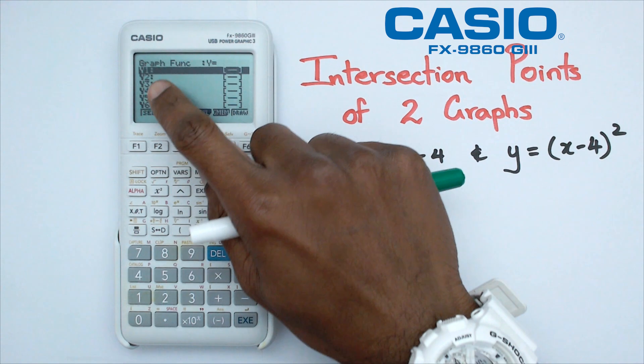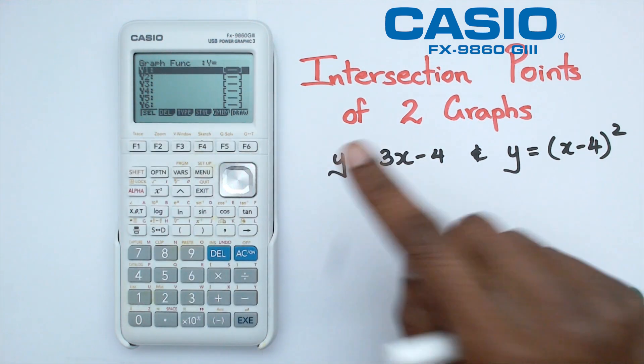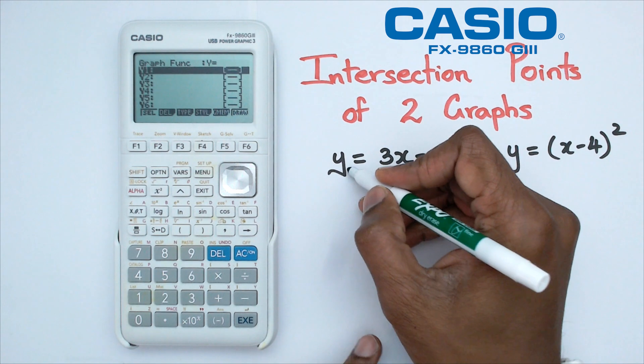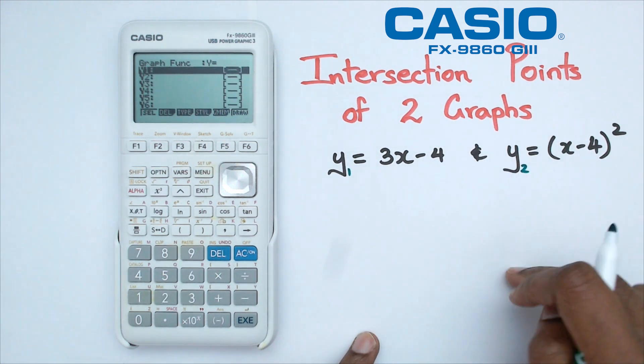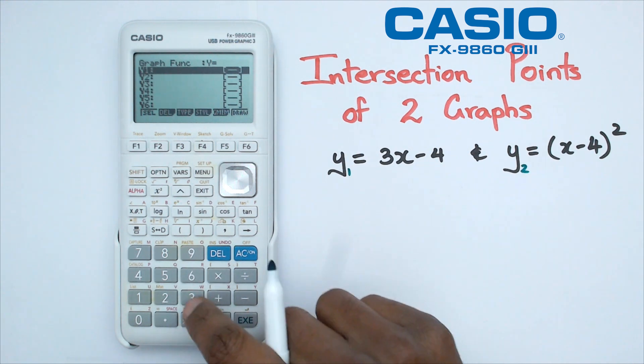And notice how we've got y1 and y2. We're going to put both of these graphs, each one as separate ones. So for example, this one here is going to be y1, this one here is going to be y2. Now the order doesn't really matter.